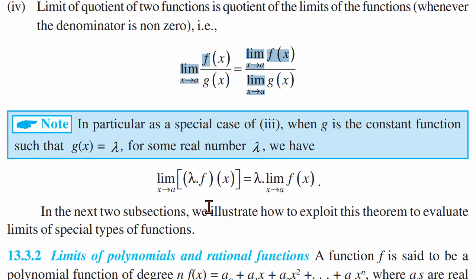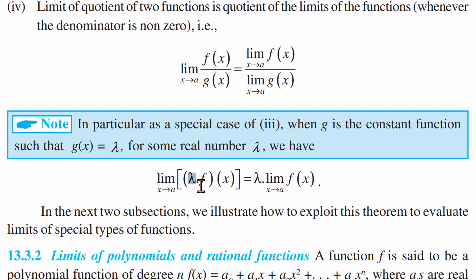This is a special case where f of x and g of x involve a constant — that is, a real number such as 2, 3, 4, etc. The constant factor can be taken outside the limit. This is very commonly used in problem solving.